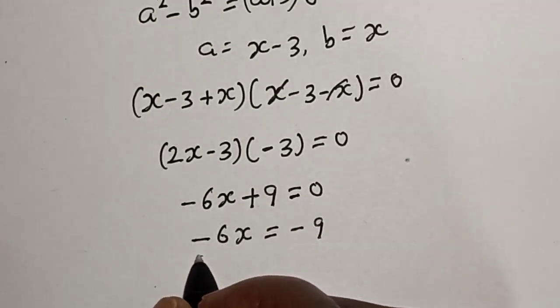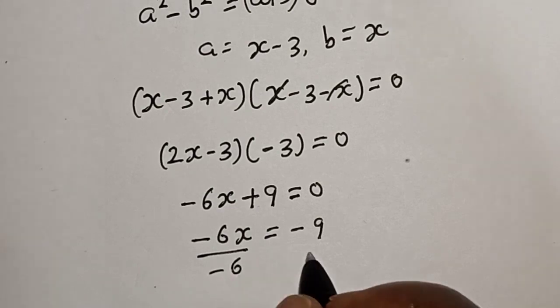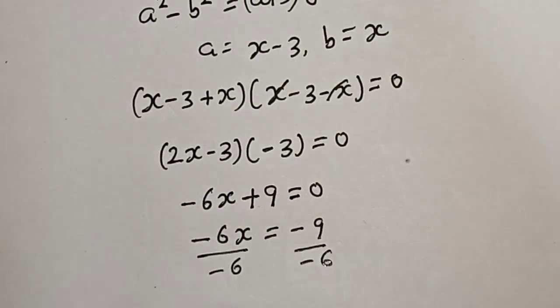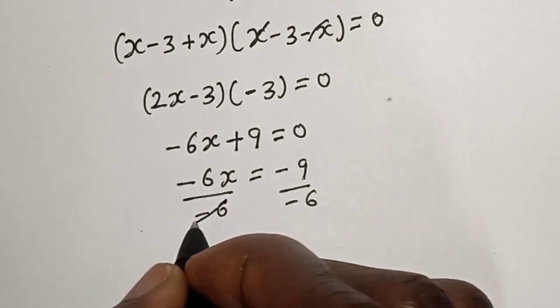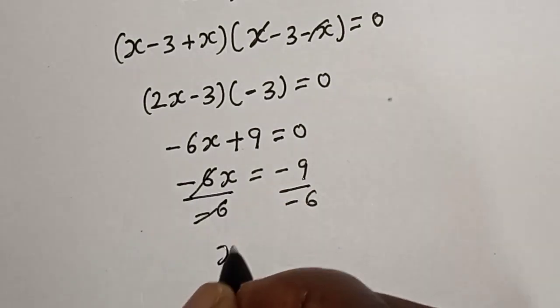And let's divide both sides by minus 6. Divided by minus 6, this one cancels this, this one cancels this.